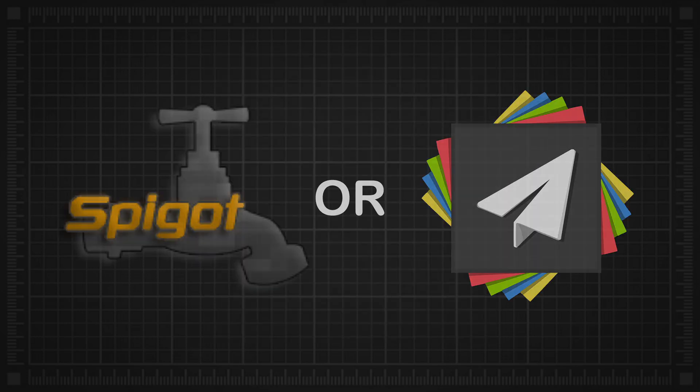On a vanilla server, the range is 96 blocks. On a server with Spigot/PaperMC software, it's 32 blocks.